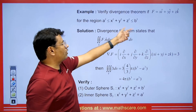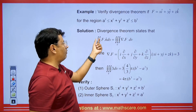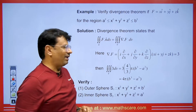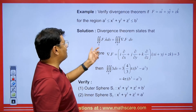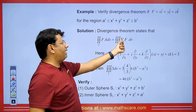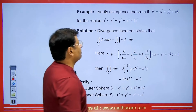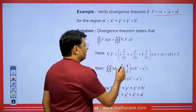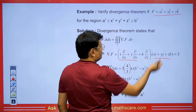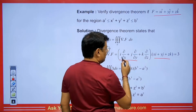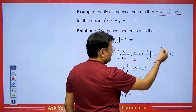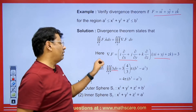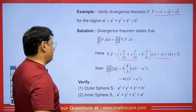The divergence theorem states that the double integration of F·n ds equals the triple integration of divergence of F dV. We will calculate del·F, the divergence of F. The function F is given, so we compute del·F as ∂x/∂x + ∂y/∂y + ∂z/∂z, which gives 1+1+1 = 3. So the integral becomes 3 multiplied by dV. We have a spherical shell, so we need to find its volume.